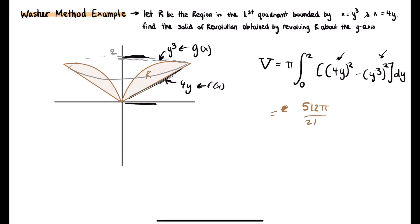Something to keep in mind with the washer method: if you're doing the washer method rotating around the y-axis, you need to use the y-bounds; if you're rotating around the x-axis, you use the x-bounds. With the washer method it's pretty straightforward.